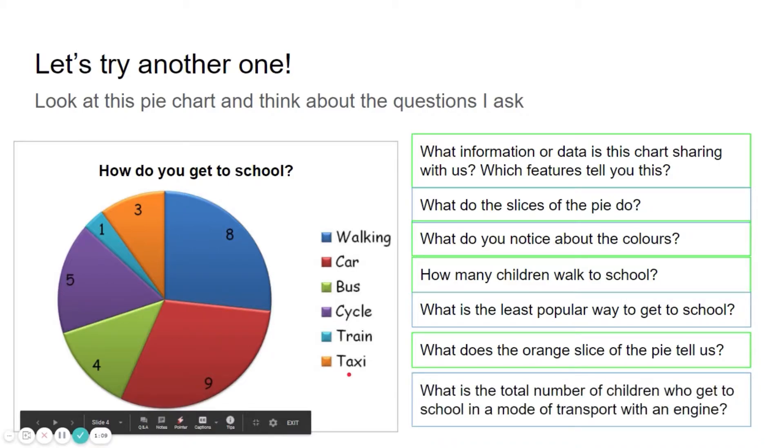Finally, what is the total number of children who get to school in a mode of transport with an engine? Quite a long question. It's something that you'd have to think about. So car, bus, train, taxi. Car is nine, bus is four, train is one and taxi is three. So nine add four is thirteen, thirteen add one is fourteen, fourteen add three is seventeen. So seventeen people go to school in a vehicle with an engine.